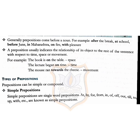For example: 'The book is on the table' — that is space. 'The lecture began on time' — that is time. 'The mouse ran towards the cheese' — that is movement. So there are three types: space, time and movement.